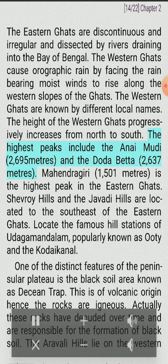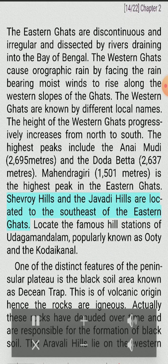The highest peaks of the Western Ghats include the Anai Mudi at 2,695 meters and the Doda Betta at 2,637 meters. Mahendragiri, at 1,501 meters, is the highest peak in the Eastern Ghats. Shevaroy Hills and the Javadi Hills are located to the southeast of the Eastern Ghats. Famous hill stations of Udhagamandalam, popularly known as Ooty, and Kodaikanal are located in this region.